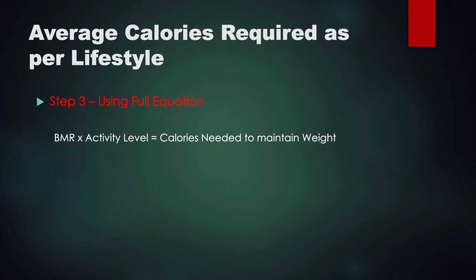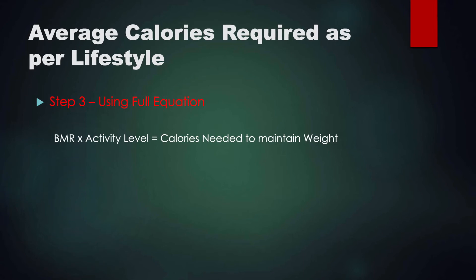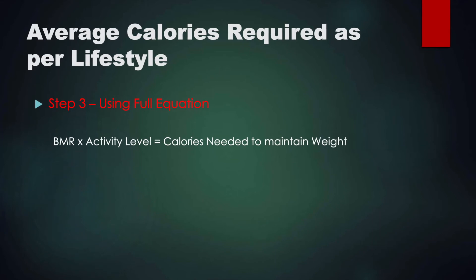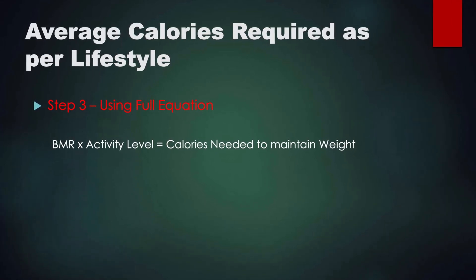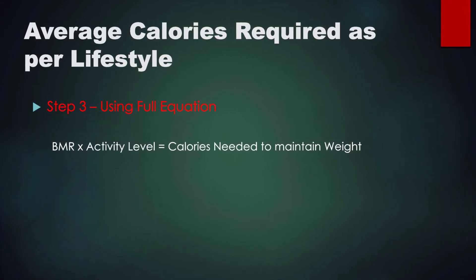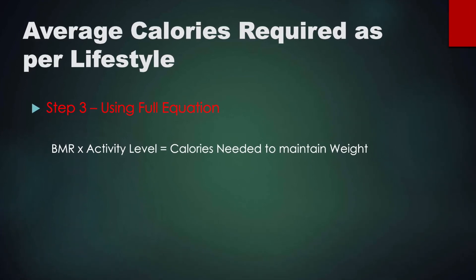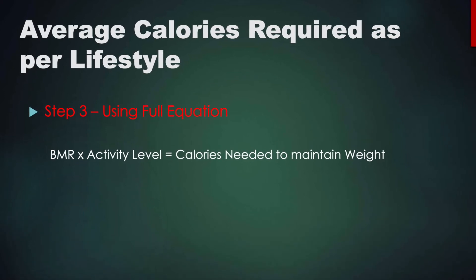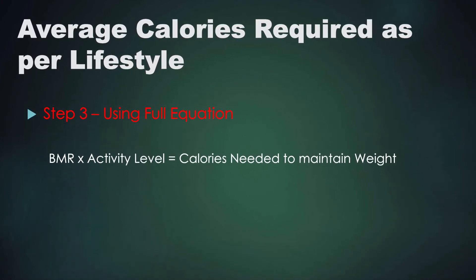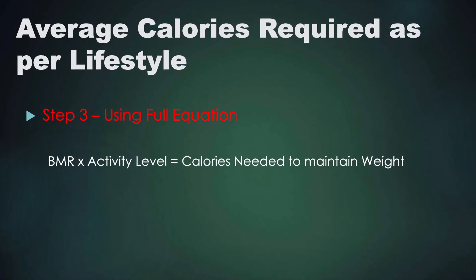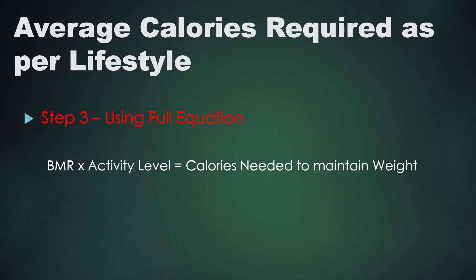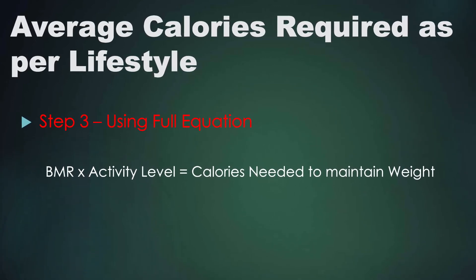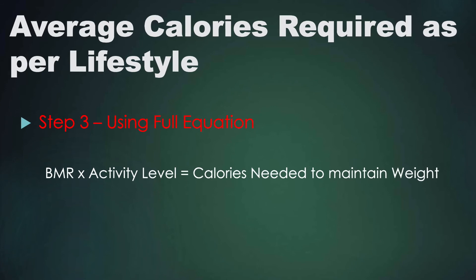Moving on to step three, which is very simple: multiply your BMR from step one by your activity level from step two. You will get the calories needed to maintain your normal weight. If your BMI is in the normal range, consume this amount of energy to stay healthy. But if your BMI is on the higher side — if you are obese or overweight — you need to cut down on your calorie intake and reduce your calories accordingly.